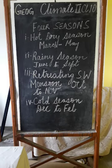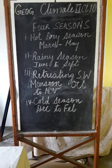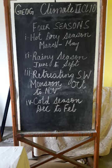The Bay of Bengal branch divides into two. One branch goes to the foothills of the Himalayas, continues giving rains, and finally meets the Arabian Sea branch near Punjab. The second branch of the Bay of Bengal goes along the Brahmaputra valley.